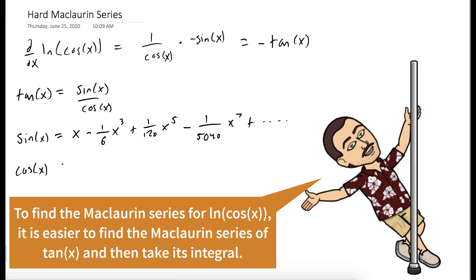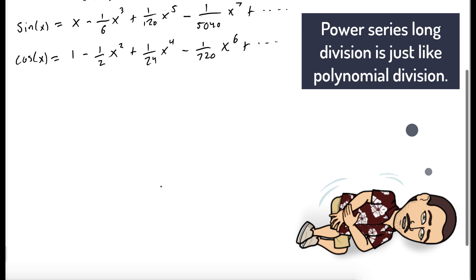Cosine of x is equal to 1 minus one half x squared plus one twenty-fourth x to the fourth minus one over 720 x to the sixth plus higher terms. We're going to do long division with these power series to find the Maclaurin series of tangent of x.